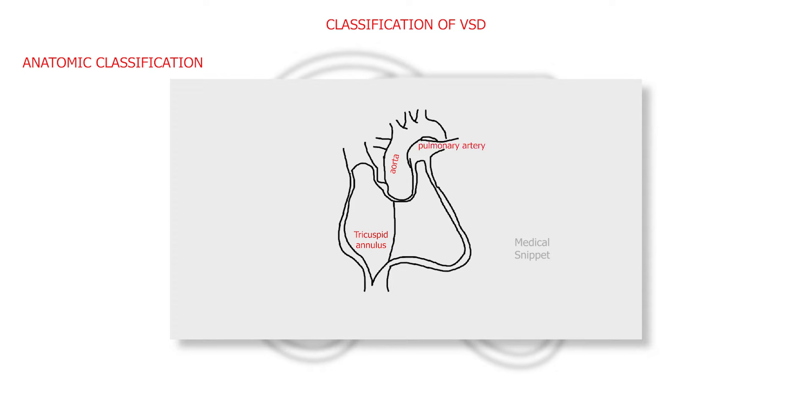Interventricular septum has four parts: membranous, inlet, outlet, and muscular septum. So the defect occurring in these parts are named accordingly.